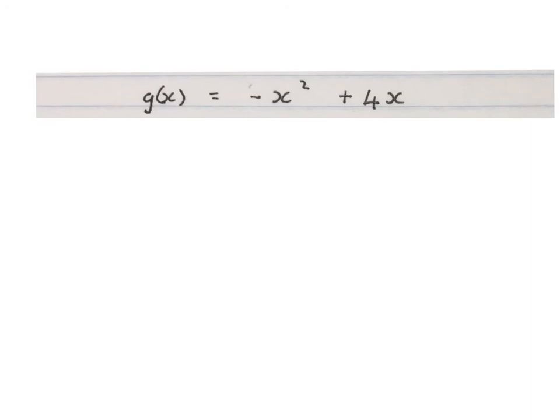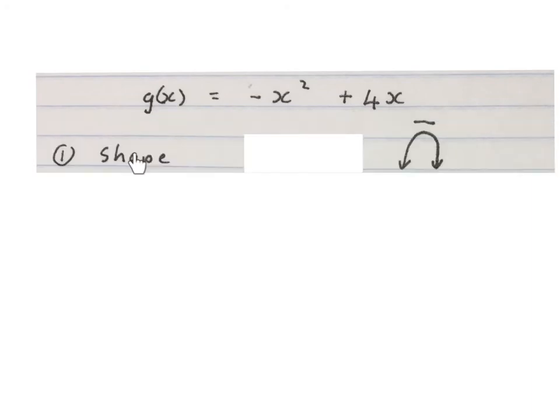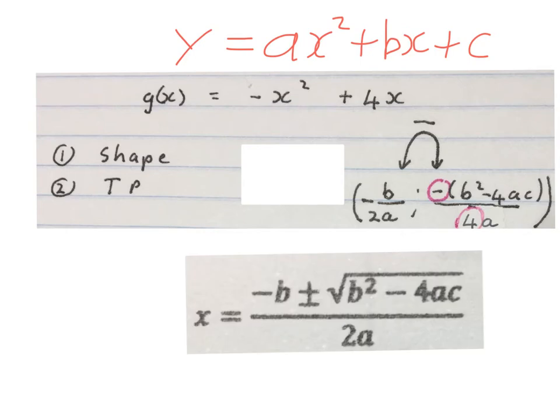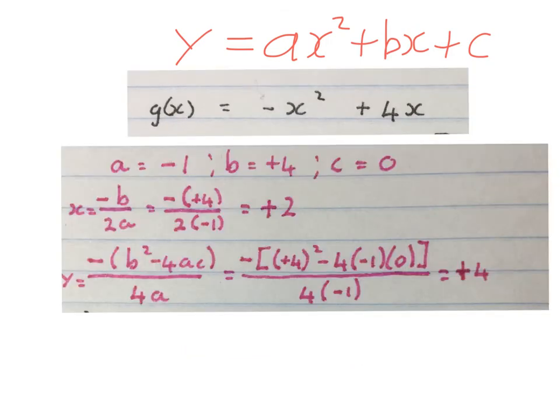Let's now sketch this parabola. Firstly, we find the shape. Because there is a minus in front of the x-square, it will be an unhappy shape. Next we work out the turning point. Because the equation is written in this form, we will use this set of formulas. This to find the x of my turning point and this formula to find the y of my turning point. You already know your quadratic formula. If you look inside your quadratic formula, there is that formula that you see for the x of the turning point. And if you pull that b-square minus 4ac out with a bracket, put a minus in front of it and change that to a 4, then you've got that formula.